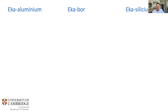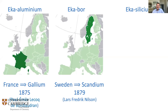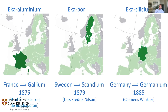So we have three elements predicted by Mendeleev: eka-aluminium became gallium, named after France (the Latinized version); eka-boron was discovered in 1879 and named scandium, the Latinized version of Sweden; and eka-silicon was eventually named germanium. All three were named after the countries in which they were discovered.